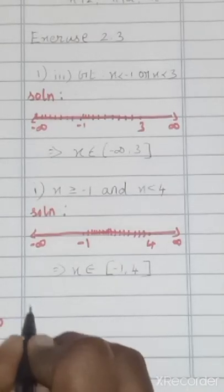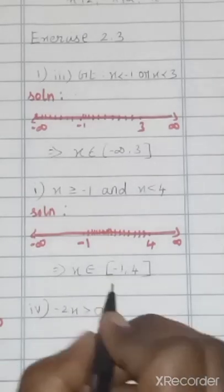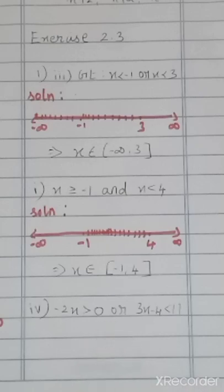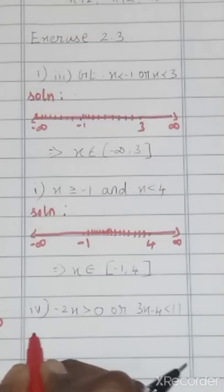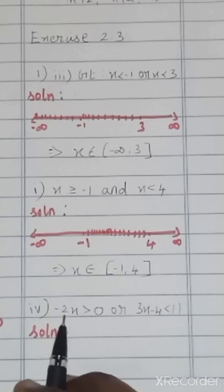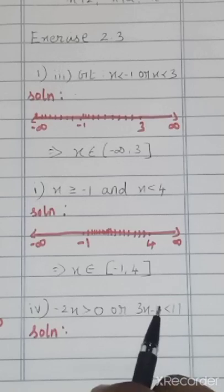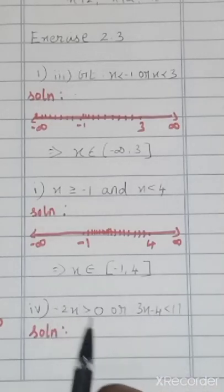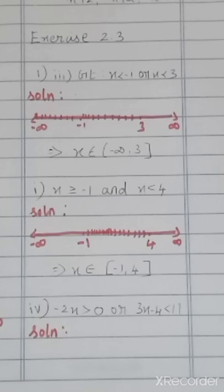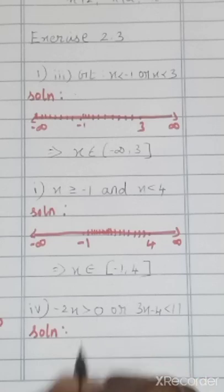Fourth subdivision: −2x > 0 or 3x − 4 < 11. We cannot give the answer directly because we have to solve these linear expressions first. For −2x > 0: taking 2 to that side gives −x > 0. For 3x − 4 < 11: taking 4 to that side gives 3x < 15.